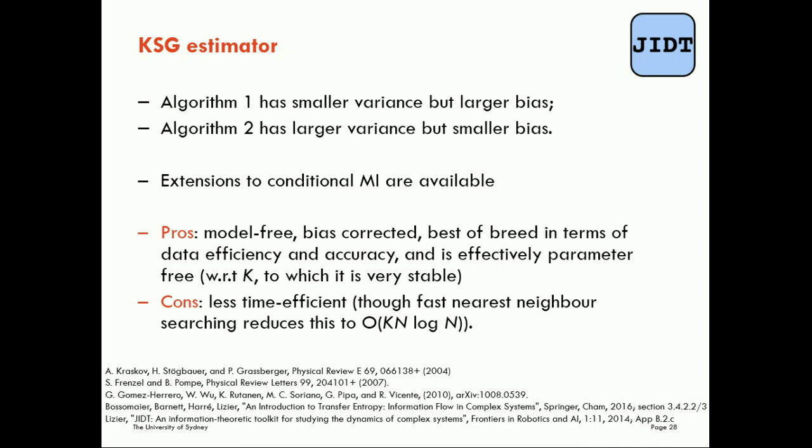Model free is the key highlight here in comparison to the Gaussian model estimator — we are not making any assumptions about the distribution of the points, and that's why it's so accurate. The cons are that because it's making fewer assumptions, it's far less time efficient than the Gaussian model estimator. Fast nearest neighbor searching can reduce this: we have this implemented using KD trees in the JADT toolkit, which reduces time complexity from O(N²) down to O(N log N). It still takes a lot longer than the Gaussian estimator though, so keep that in mind when doing many calculations on large datasets.